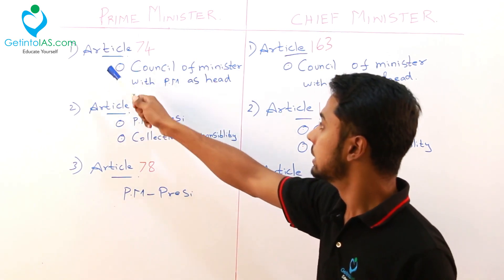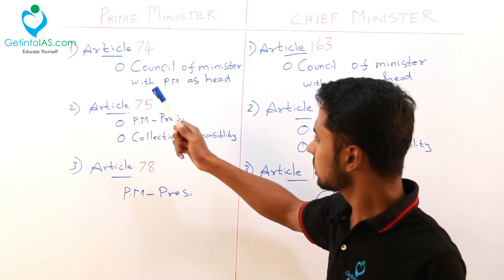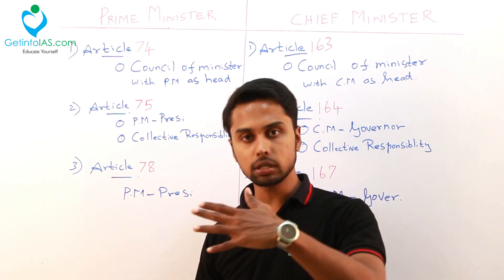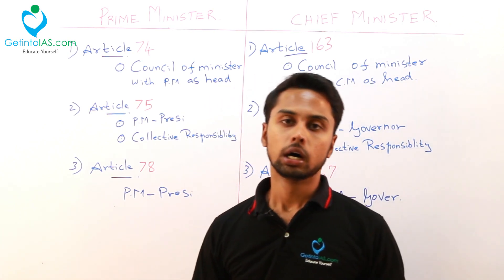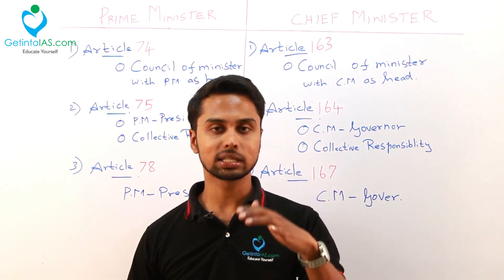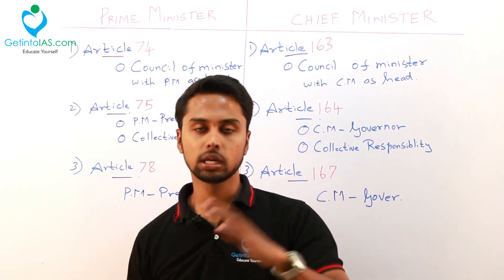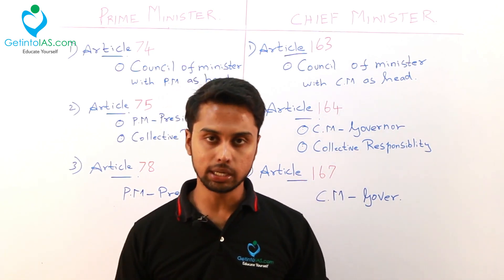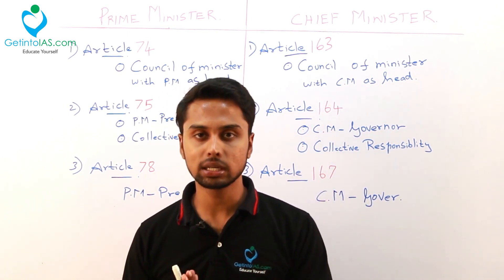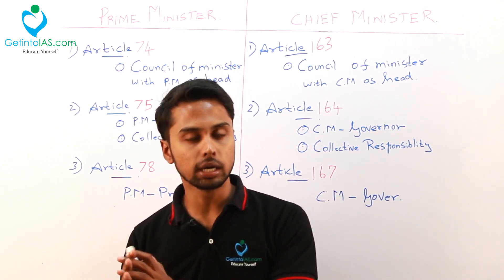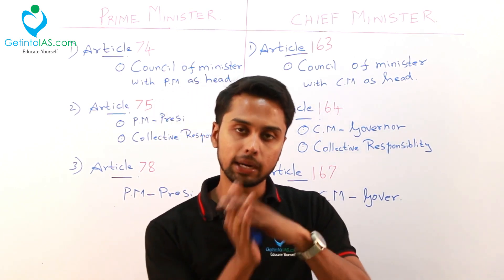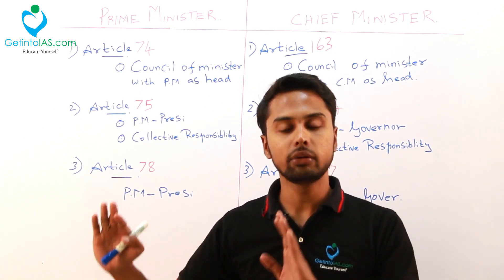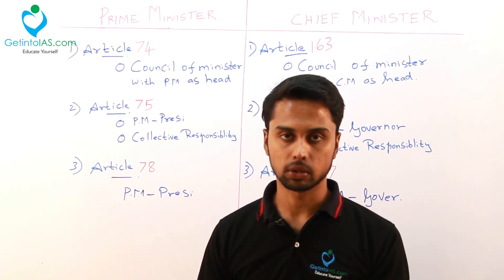The article says that the council of ministers with the prime minister as head will only aid and advise. The advice is given to the president. The council of ministers will give a certain advice to the president for any function they are going to take. But the president, initially, can return that advice if he is not okay with it. But if again they pass this advice, then it is mandatory for the president to accept that.